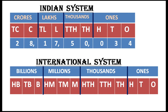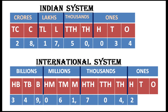Here also, I am taking one example. While reading, we have to start from the left, but while entering, we have to start from the right. Reading the number: three hundred forty-nine billions, sixty-one millions, seven hundred four thousands, two hundred.